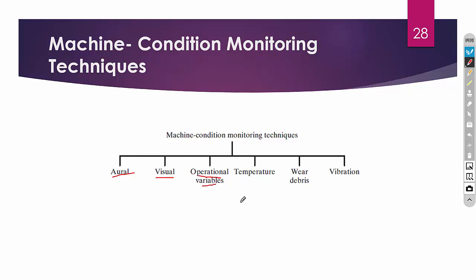Operational variable monitoring includes pressure — in boilers, pressure is monitored continuously, and if it exceeds some limit we can identify a problem. Temperature is also monitored, mostly in power plants. Wear debris analysis is another technique: in journal bearings, lubricants are used between the journal and bearing. If you analyze the lubricant and find small particles of the journal material, it means the bearing is not working properly — friction is high and the journal or lubricant needs to be replaced.